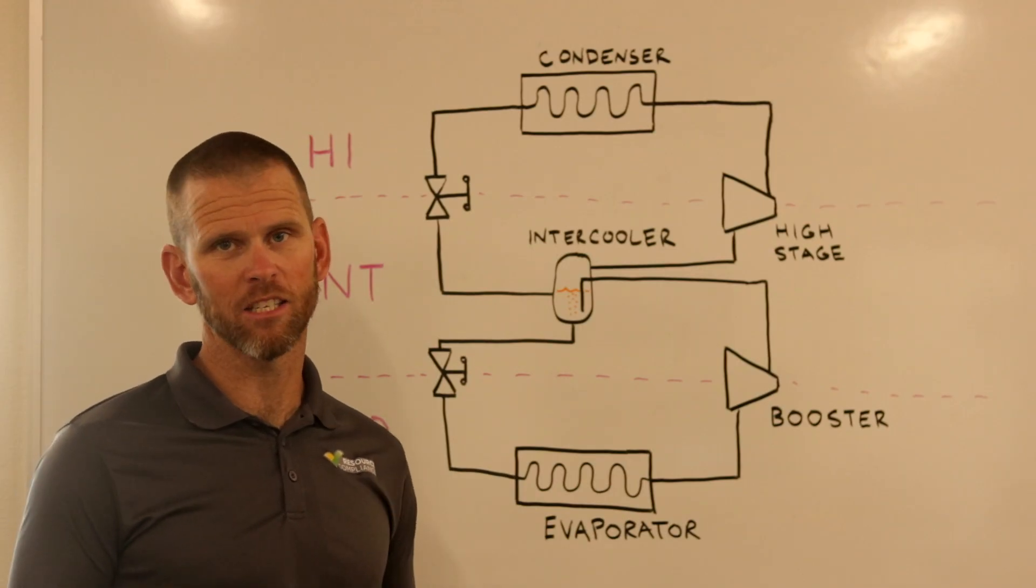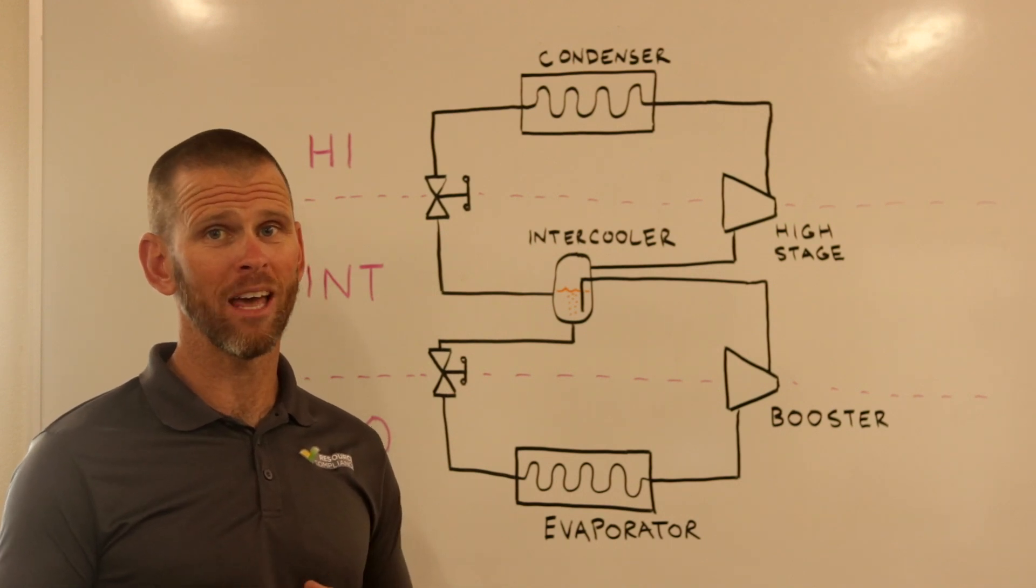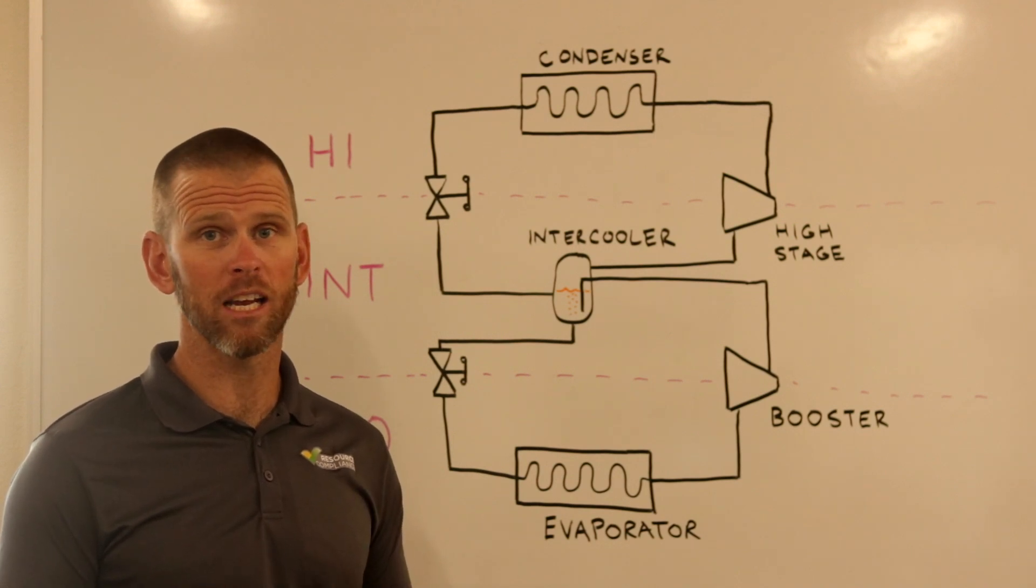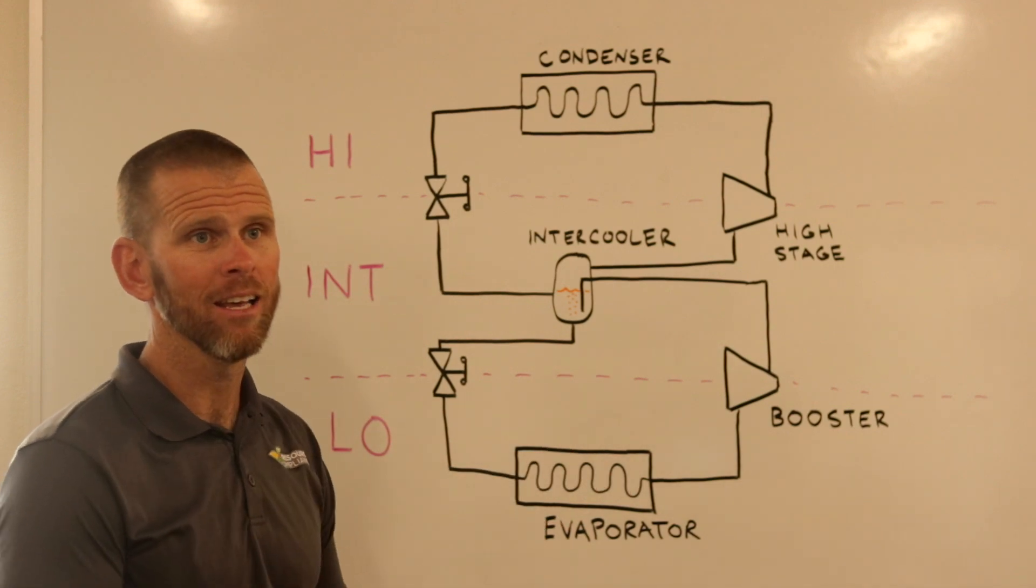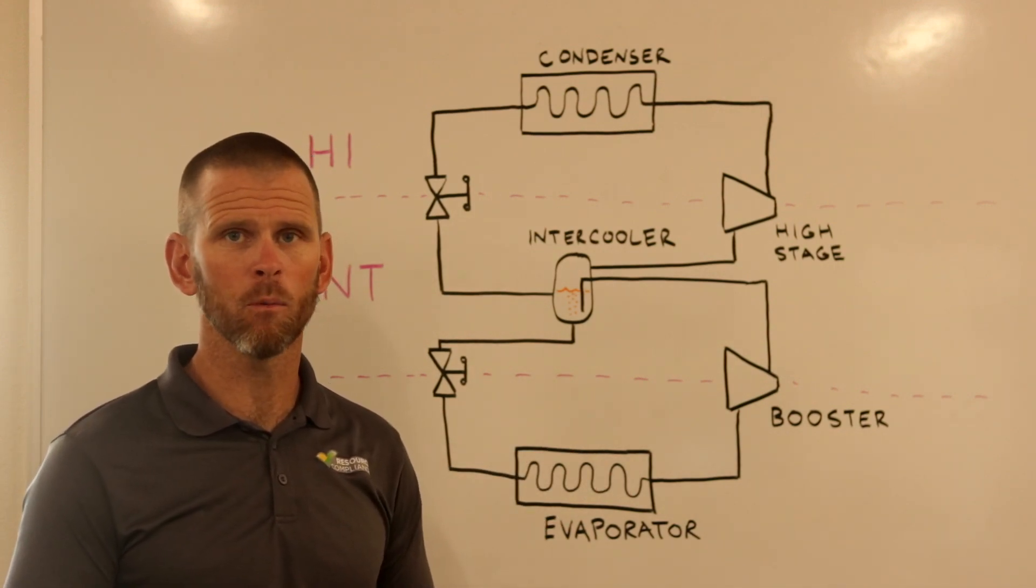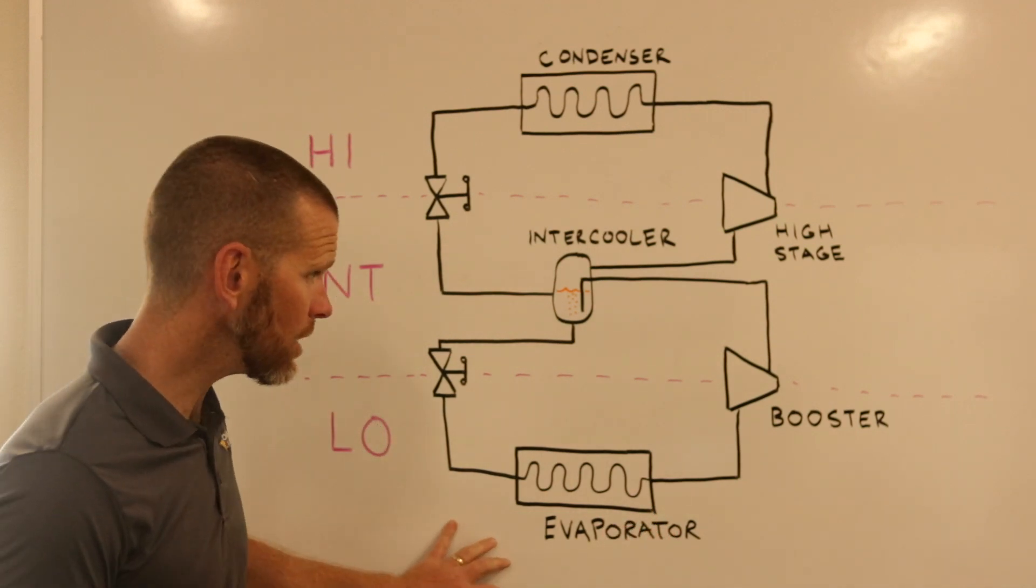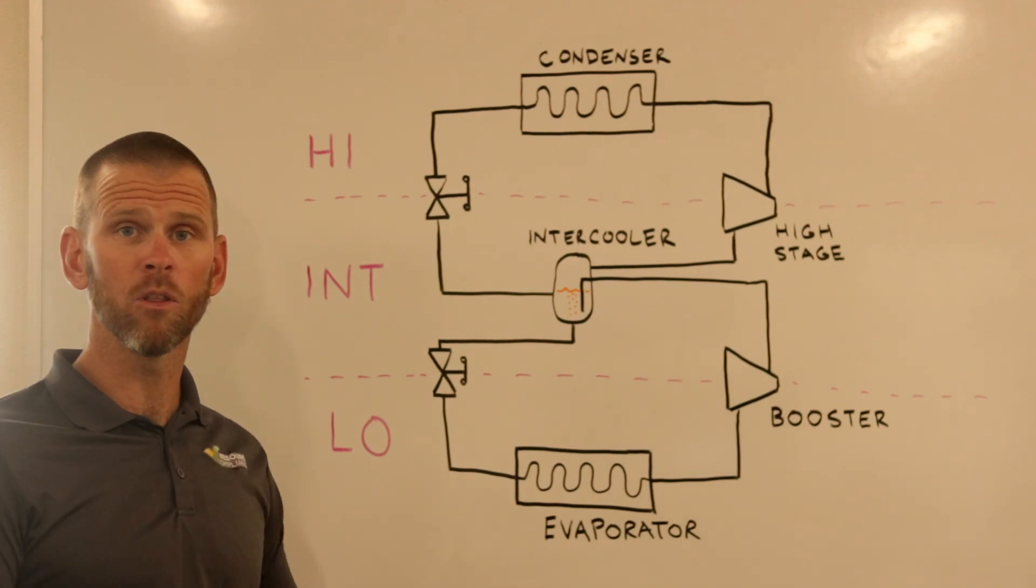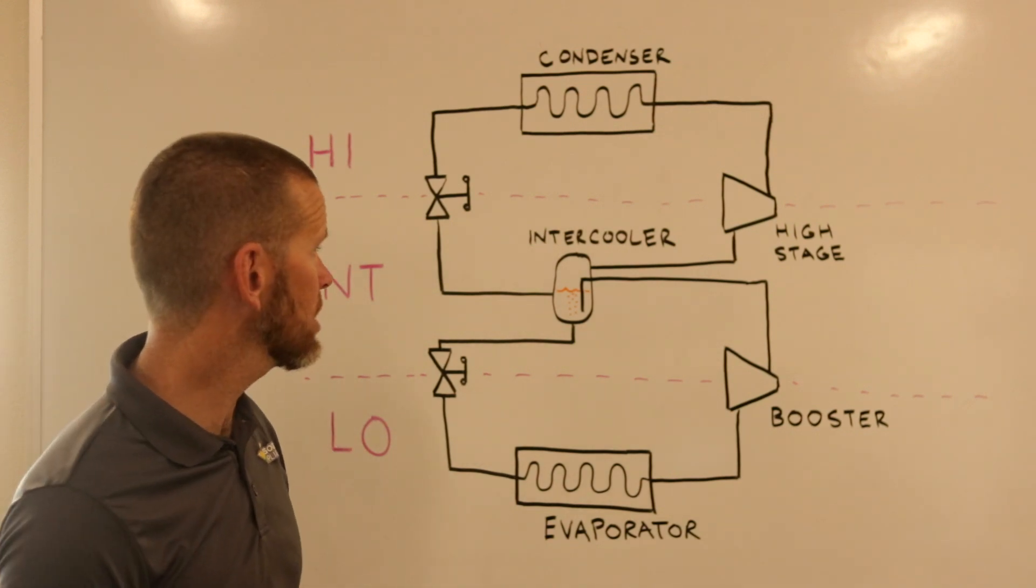So let's talk about two-stage systems. Due to the discharge temperature that results when you try to run a freezer system in a single stage of compression using ammonia, we have to go to a two-stage system, because high discharge temperatures are simply unacceptable once they get over a certain level. In a two-stage system, a simple diagram is depicted here on the whiteboard. There's a lot here that we're already familiar with because we've gone over it previously, but let's walk through this.